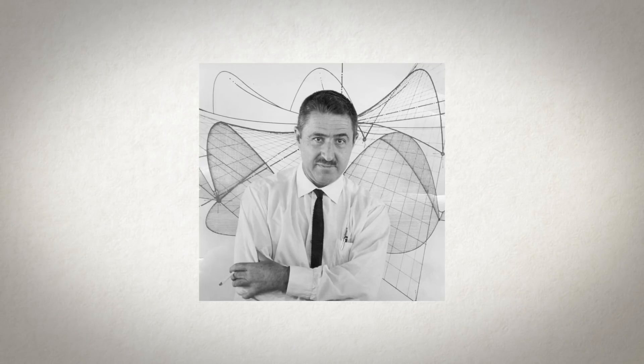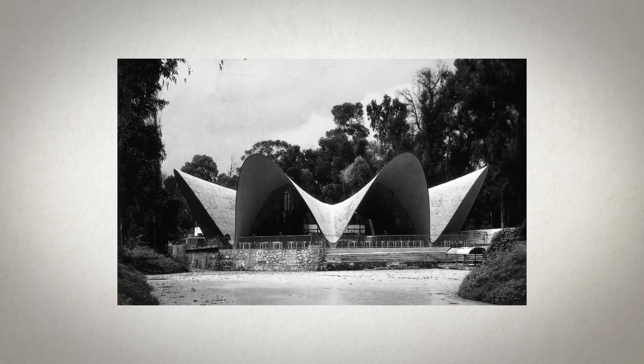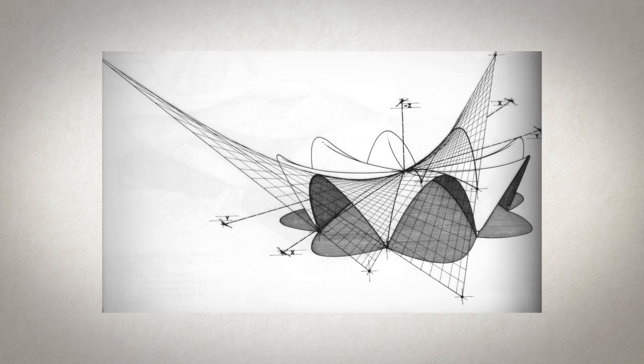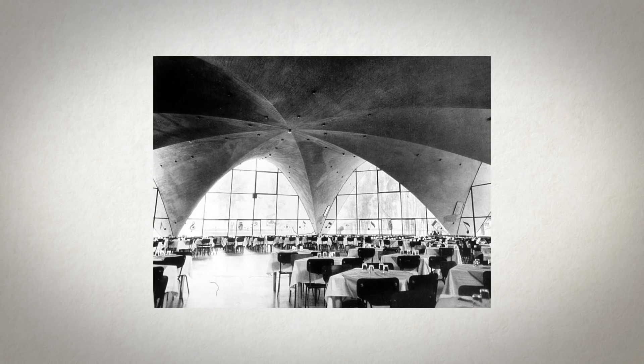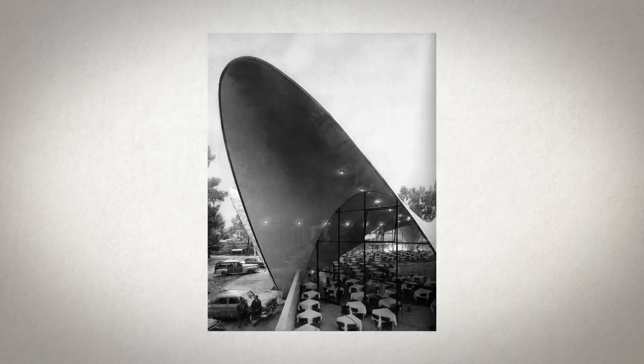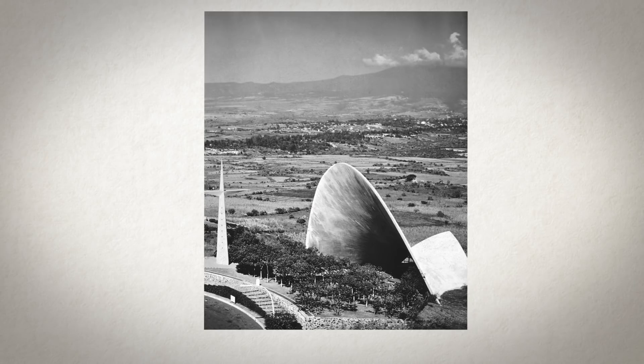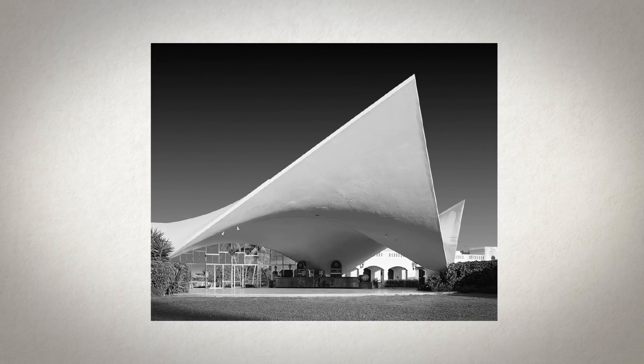Félix Candela was born in Spain, but at 26 he leaves for Mexico, where he takes up double citizenship. Candela had a special talent for geometry and an oath with the attraction for surfaces called hyperbolic paraboloids, with which he frequently resolved his architecture. Candela sustained that the geometry of this surface generated the necessary rigidity to enable the construction of blades with minimum thickness, the so-called cascarones.